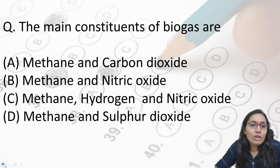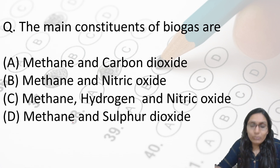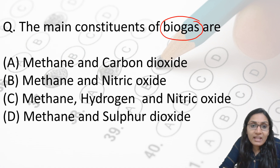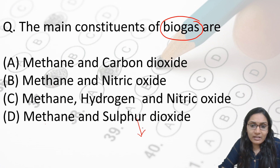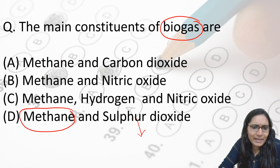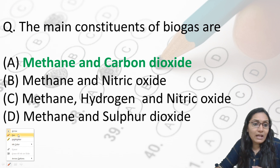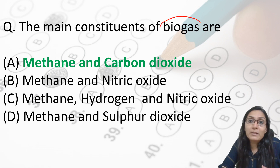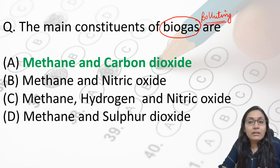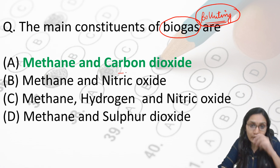What are the main constituents of biogas? Options: methane and carbon dioxide; methane and nitric oxide; methane, hydrogen and nitric oxide; methane and sulfur dioxide. Methane is common to all options and is clearly the major component. Using elimination, carbon dioxide is the second constituent because biogas mainly consists of methane and carbon dioxide. Notably, even though biogas is a renewable energy source, it can still cause pollution. The answer is methane and carbon dioxide.